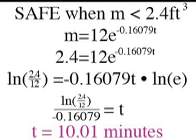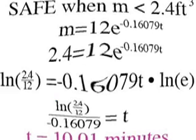It's safe to enter the garage when the level of carbon monoxide is less than 2.4 cubic feet. Substitute this value in for m, then take the natural log of both sides, followed by simple algebra of separating t to be alone, to find that the time equals 10.01 minutes, or 10 minutes and 0.6 seconds.